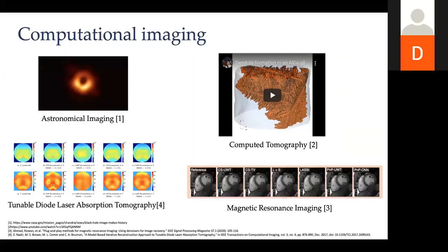Computational imaging is the case where you indirectly measure your image and try to form it through those measurements, so you don't have the traditional sense of measuring a pixel at a time. Most of you are familiar with the image of the black hole, which was very popular. It was done through a collaboration between hundreds of scientists. I encourage you as undergraduate students to listen to Katie Bouman's talks — she's very good at explaining it to a level undergraduates can understand.